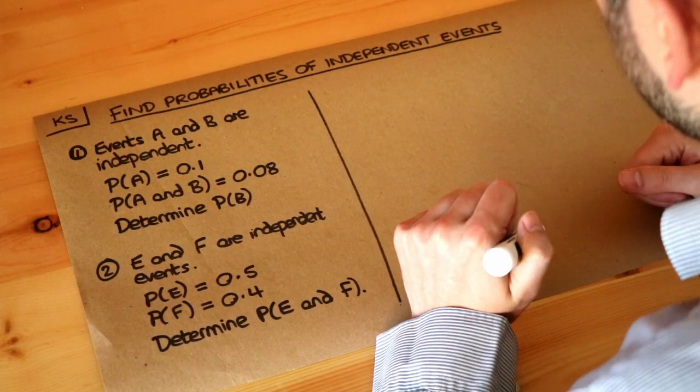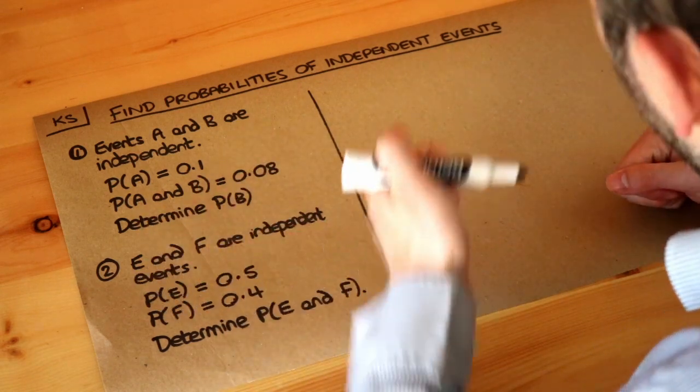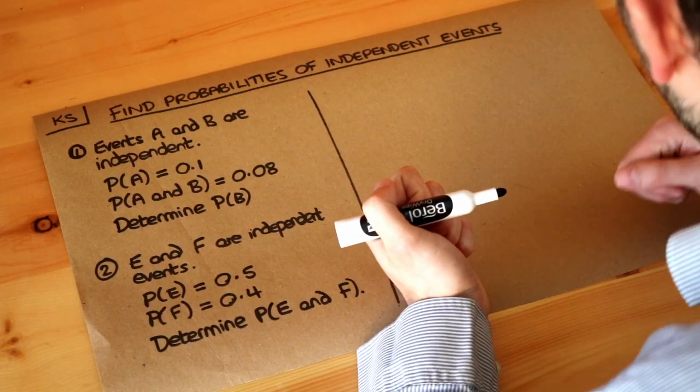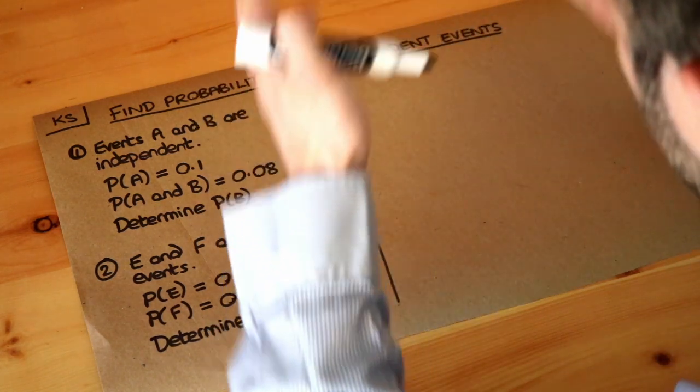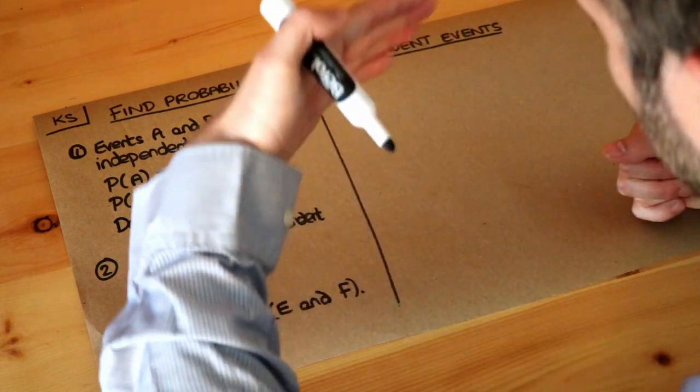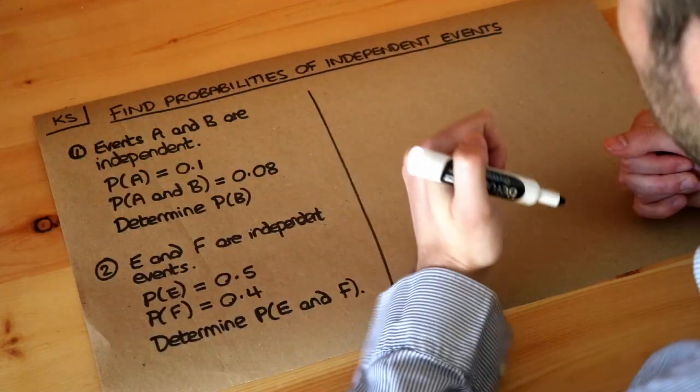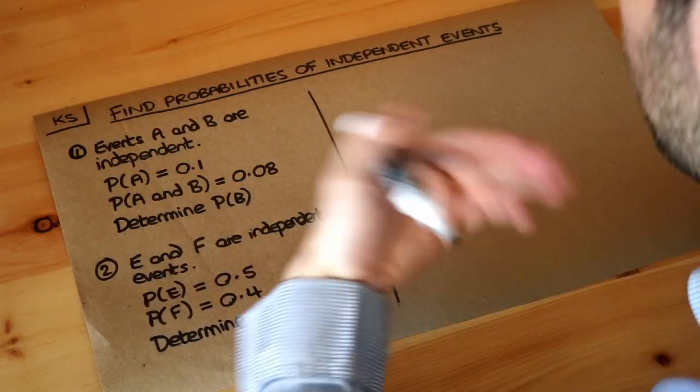We can combine events by saying, okay, what's the probability of getting heads on a coin and then getting a six on a dice? If they're independent, that means they don't affect each other. And if we want to find the probability of one thing and another thing happening and they don't affect each other, we can actually multiply the probabilities.